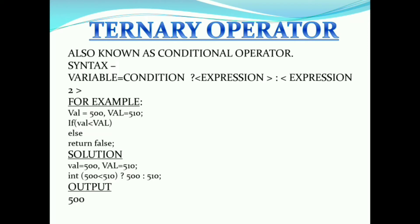The syntax is: variable = condition ? expression1 : expression2. For example, variable val equals 500 and capital equals 510. If val is smaller than capital, return val; else return false. How does it work? 500 is smaller than 510, which is true. Remember: if the condition is true, expression 1 is evaluated; if the condition is false, expression 2 is evaluated.